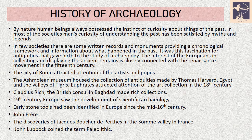The city of Rome attracted the attention of artists. The excavation and collection of ancient antiquities was financed. The Ashmolean Museum housed the collection of antiquities made by Thomas Howard. Egypt and the valleys of Tigris and Euphrates attracted the attention of art collectors in the 18th century. In Claudius Rich, the British Council in Baghdad made rich collections from many Mesopotamian sites. These collections formed part of the British Museum.